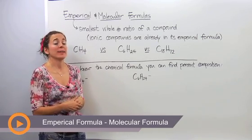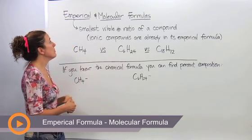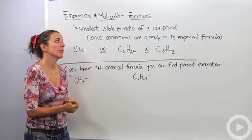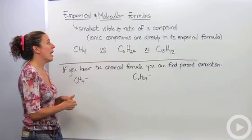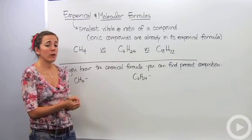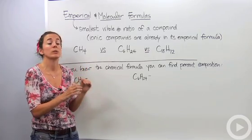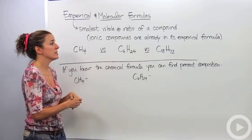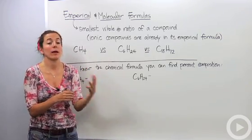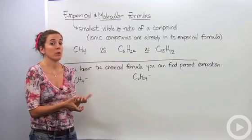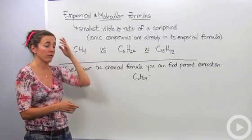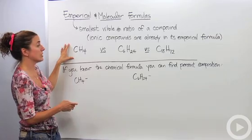Alright, so we're going to talk about empirical and molecular formulas. Empirical formulas are the smallest whole number ratio of a compound. Ionic compounds are already in its empirical formula because it's already in its lowest ratio. When you bring two ions together, it's actually in its lowest ratio already. So ionic compounds don't have an empirical and molecular formula. However, covalent compounds, or molecules, do have empirical and molecular formulas, which we'll illustrate up here.